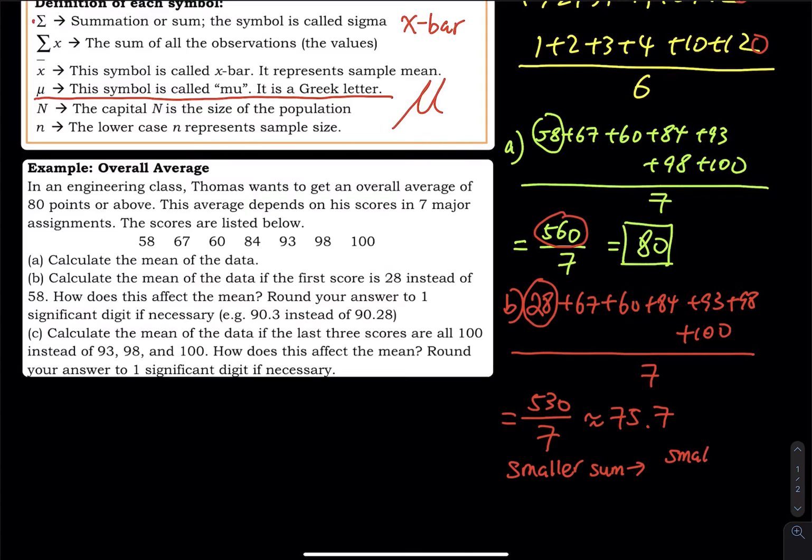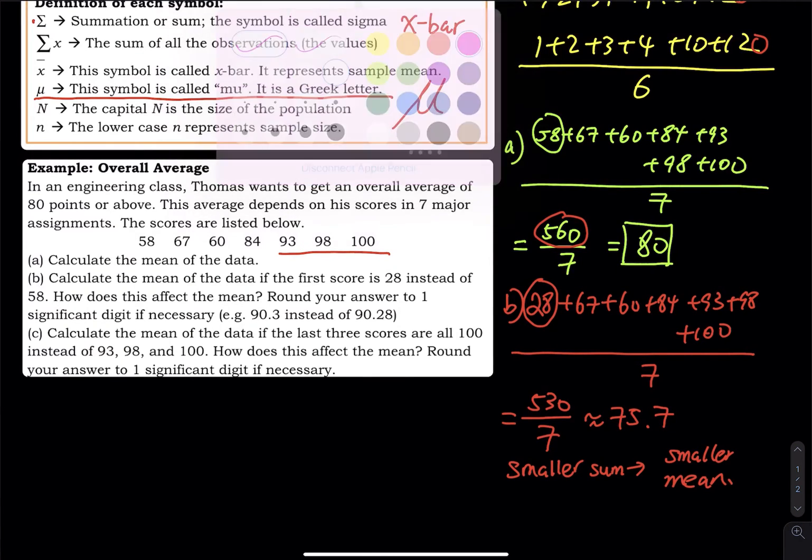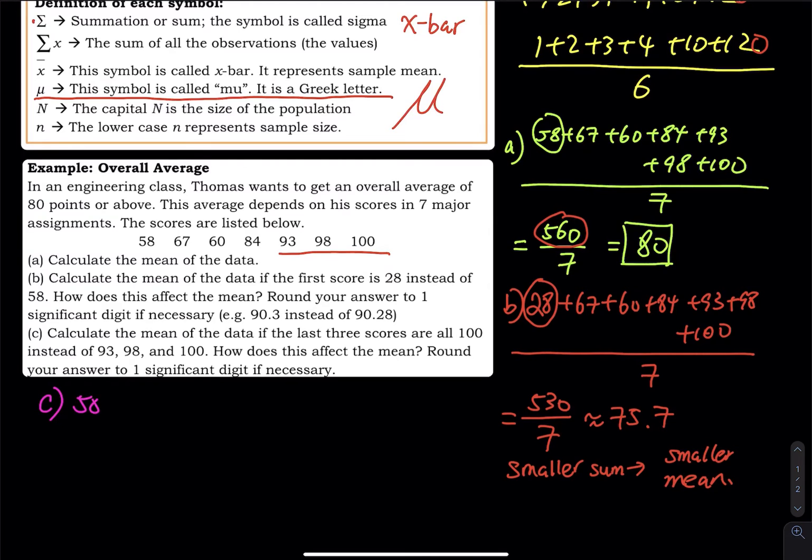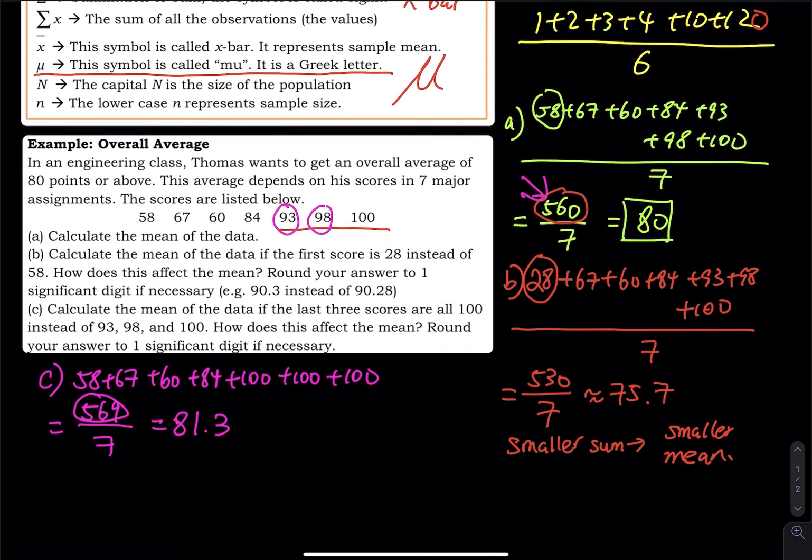In part (c), what if the last three scores are all 100 points? Does that change the mean? Of course. We do 58 plus 67 plus 60 plus 84 plus 100 plus 100 plus 100, divided by seven. This gives you additional nine points in the total. Instead of 560, you get 569 divided by seven, which equals 81.3. You get a bigger sum, then you get a bigger mean.